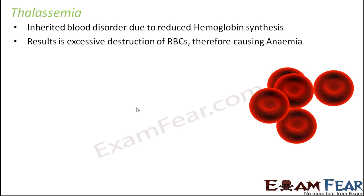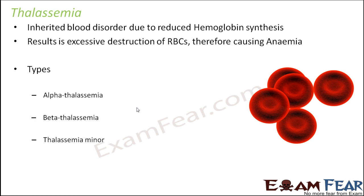Thalassemia can be at a very less severe level where it doesn't really impact the patient much, whereas it could also be really severe and fatal. There could be many different forms of thalassemia. There are three major forms: alpha thalassemia, beta thalassemia, and thalassemia minor.